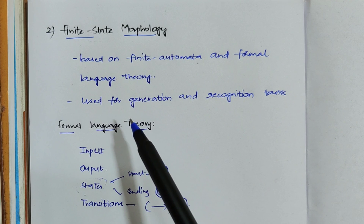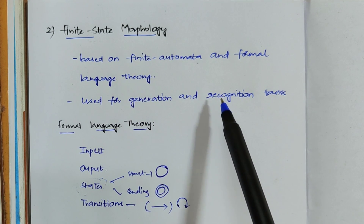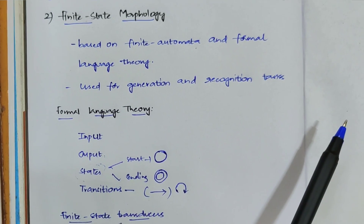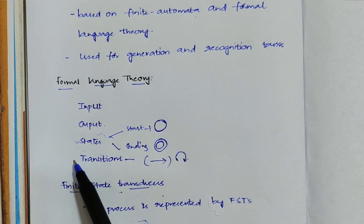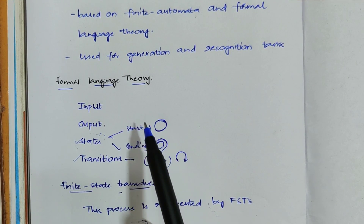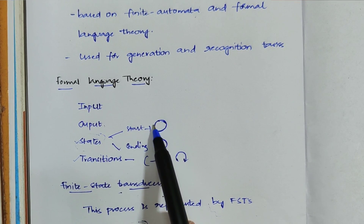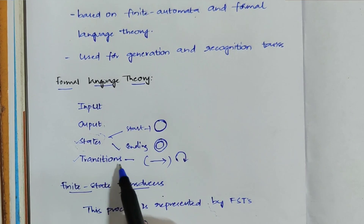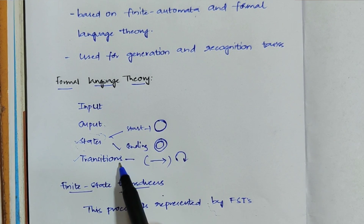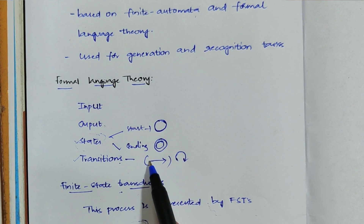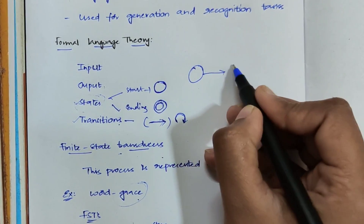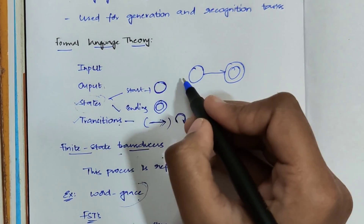It is also used for generation and recognition tasks. Before discussing what generation and recognition means, you need to know some basics of formal language theory. In formal language theory we have states and transitions. States can be a starting state or ending state. The starting state is represented by one circle, and the ending state is represented by two circles, meaning you can't go further from that state. A transition is nothing but changing from one state to another, represented by an arrow symbol or a self loop.